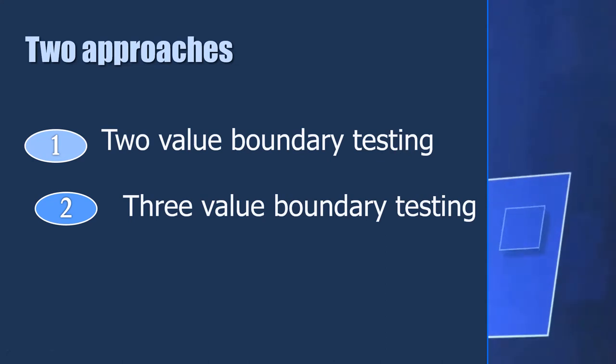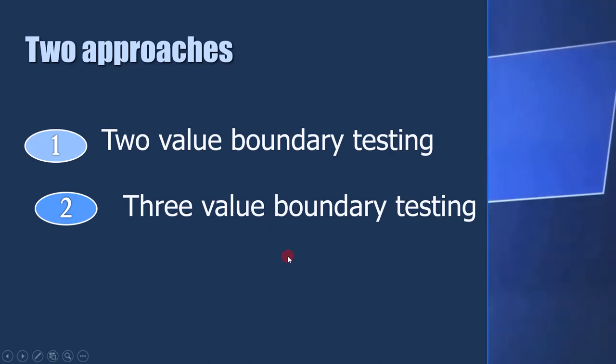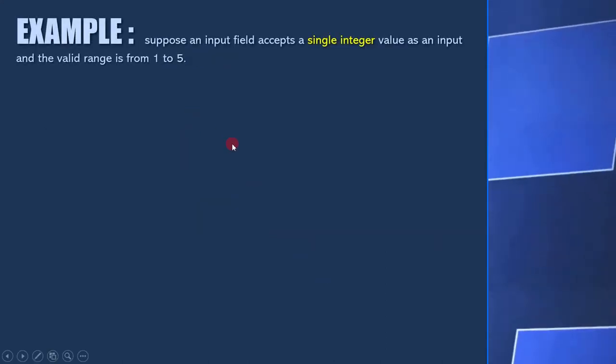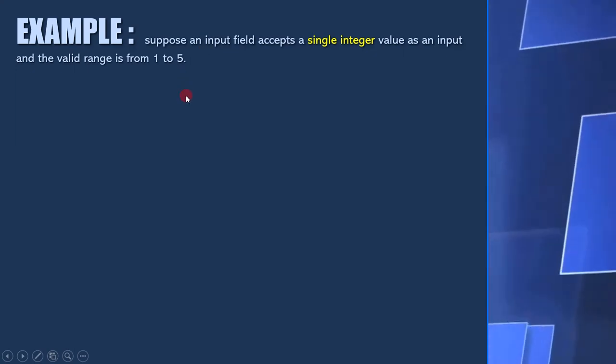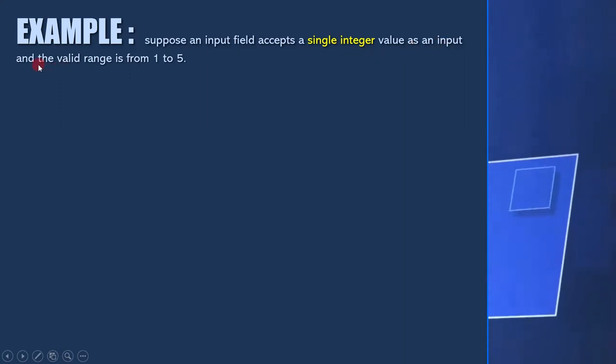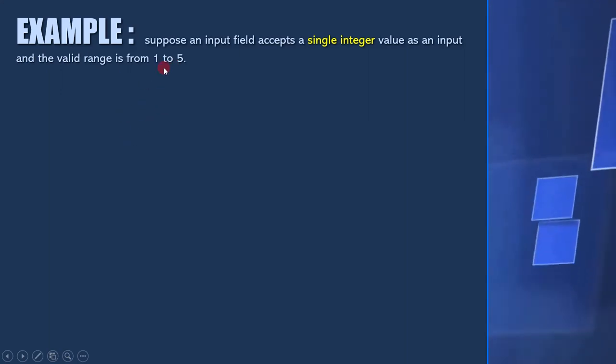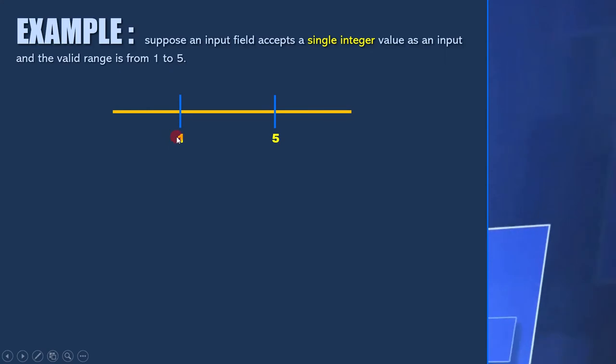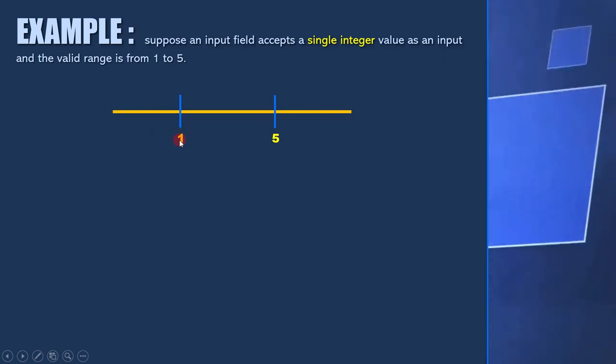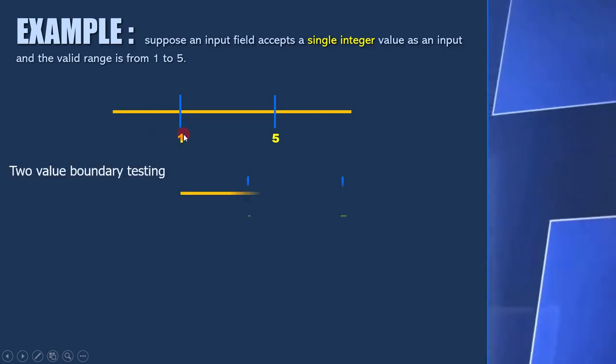Now let's see few examples to understand both approaches. Suppose this is the requirement. An input field accepts a single integer value as an input and the valid range is from 1 to 5. Here it is clear that 1 and 5 are the boundary values. Now let's see how to apply two-value boundary testing and three-value boundary testing.